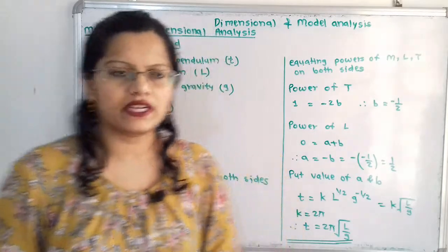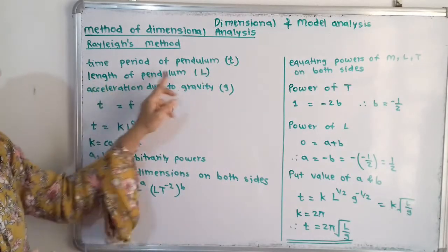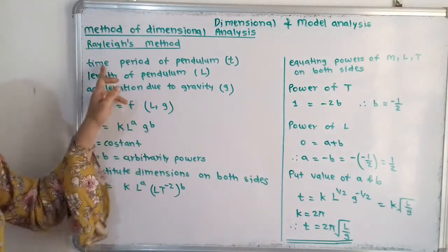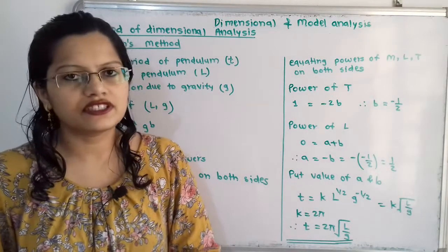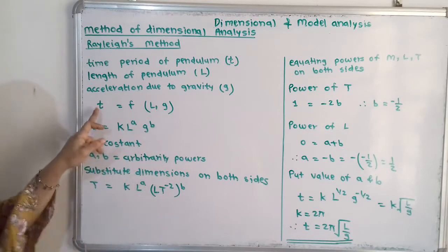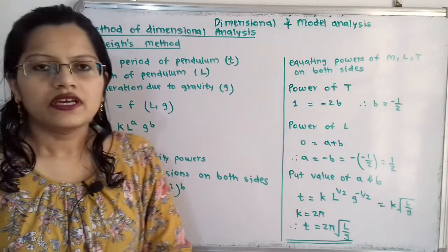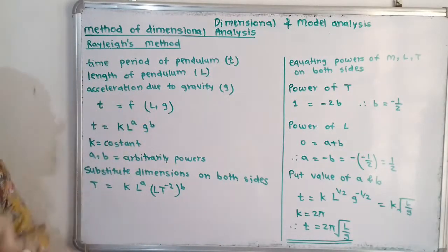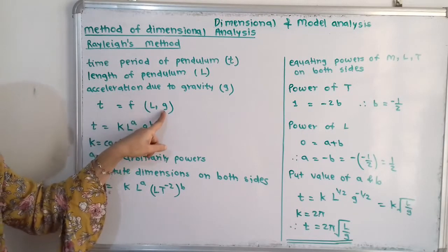For that we will first write the given data. It is given that the time period of the pendulum is T, the length of the pendulum is capital L, and the acceleration due to gravity is G. According to the question, T depends upon L and G, so we can write T is a function of L and G, that is T = F(L, G). Now we will use Rayleigh's method, so according to Rayleigh's method we write T = K into L raise to A into G raise to B.